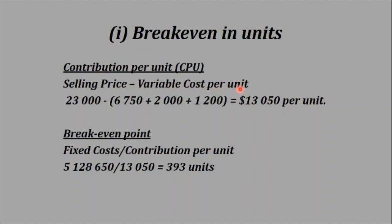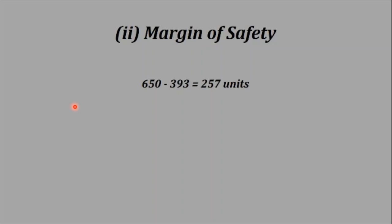To get the contribution per unit, the formula is selling price minus the variable cost per unit. In this question the selling price is 23,000, and the variable cost per unit is raw material plus labor plus overhead per unit. When we subtract that from the selling price we get 13,050 per unit. The breakeven point then becomes fixed cost over contribution per unit: 5,128,650 is the budgeted fixed cost — we must make sure we use the budgeted fixed cost here — divided by 13,050, which equals 393 units.